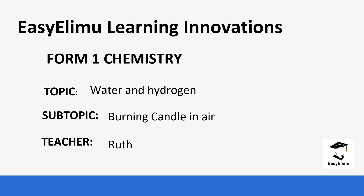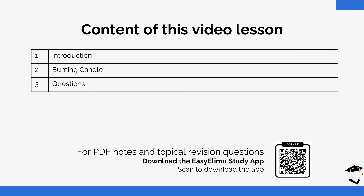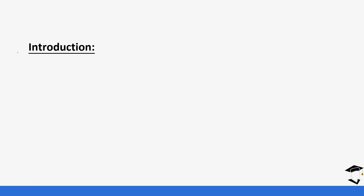Welcome to Easy Elem Learning Simplified. My name is Ruth, and today we are going to be discussing Form One Chemistry. Our topic for today is called Water and Hydrogen, and our subtopic is the burning candle in air, which you are going to relate with the active part of air. We will begin with an introduction to sources of water, then look at the burning candle experiment, determine the products, and review a few questions.